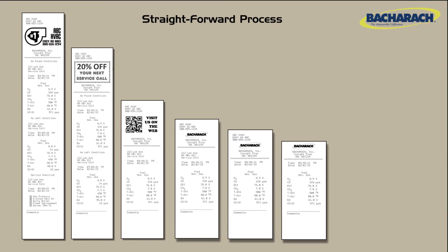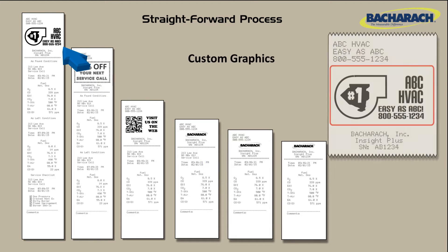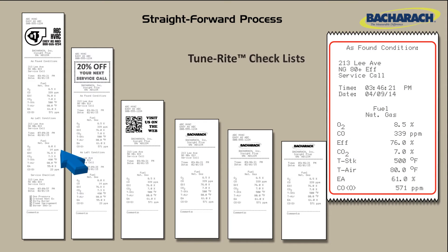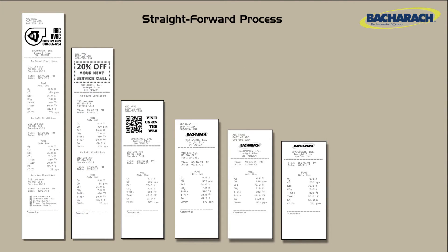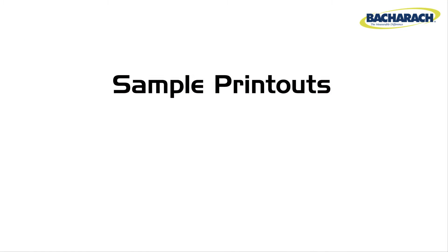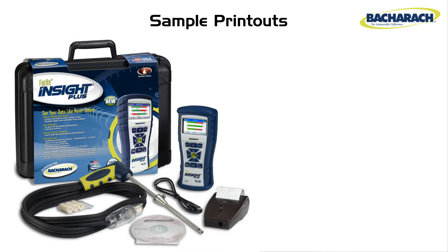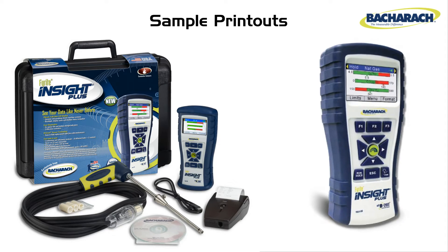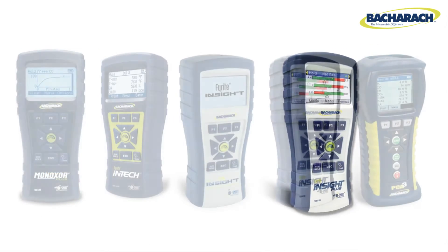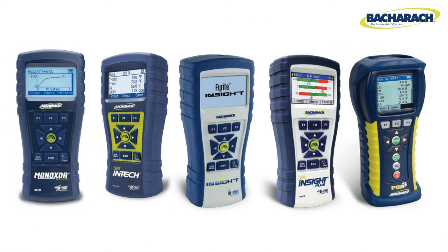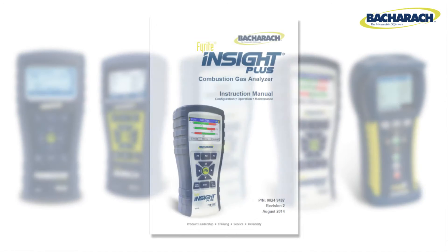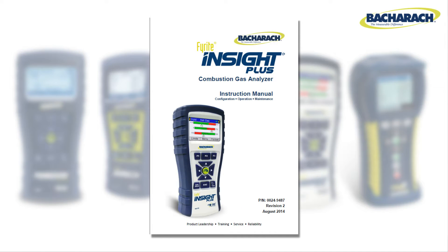Customizing analyzer printouts is an easy and straightforward process. Depending on your instrument type, analyzer printouts can include user IDs, test IDs, custom graphics, and even data and checklists from the latest TuneRight equipped analyzer. For the printout examples in this video, we'll be using a Bacharach Insight Plus combustion analyzer. Many of the features discussed here are also available in most Bacharach analyzers. Nevertheless, be sure to consult your analyzer's instruction manual for a complete list of available features and printing options.